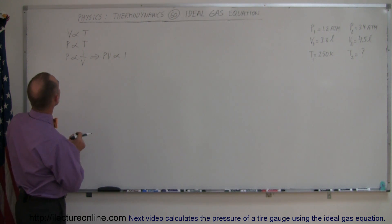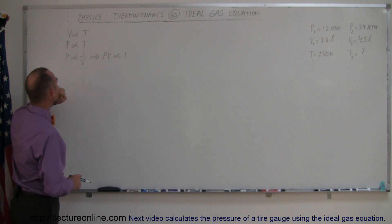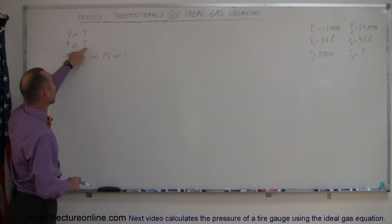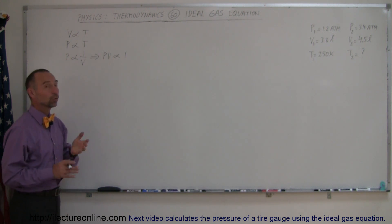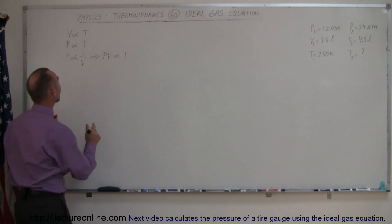Now with Charles' law we realize that the volume is proportional to temperature. With Amonton's law we realize that the pressure is proportional to the temperature. And with Boyle's law we realize that the pressure is proportional to 1 over the volume, which means that pressure times volume is proportional to 1.